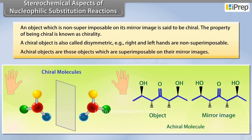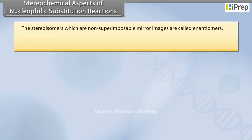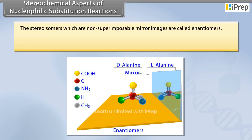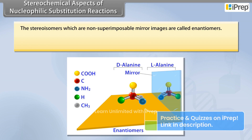Achiral objects are those objects which are superimposable on their mirror images. The stereoisomers which are non-superimposable mirror images are called Enantiomers.